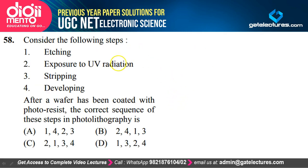Question 58: After a wafer has been coated with photoresist, the correct sequence of steps in photolithography is — option B satisfies the correct sequence: exposure to UV radiation, developing, etching, stripping.